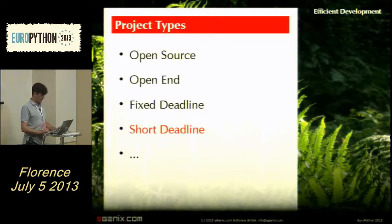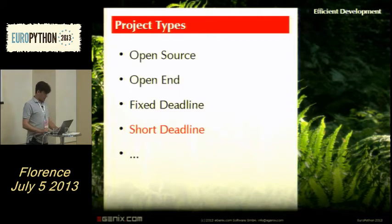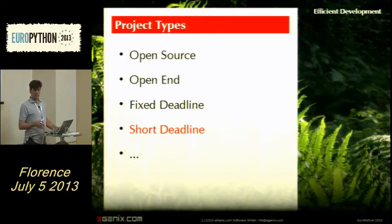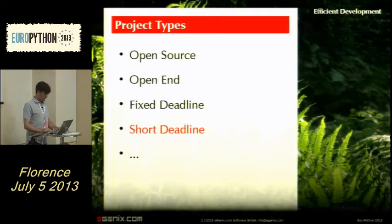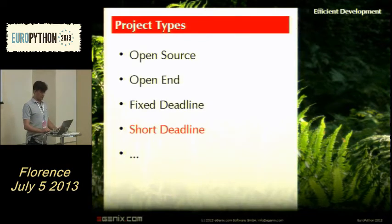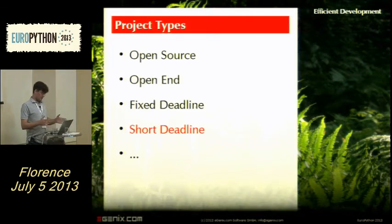There are different types of projects you can run. You can have open source projects like OpenStack or Python itself. You can have open-ended projects with no fixed deadline — they're done when the feature set is complete. Then you have fixed deadline setups where the customer says they want to launch on a certain date. Unfortunately those deadlines are usually defined by the customer, and because customers often don't know how to correctly estimate development time, you end up with very short deadlines.